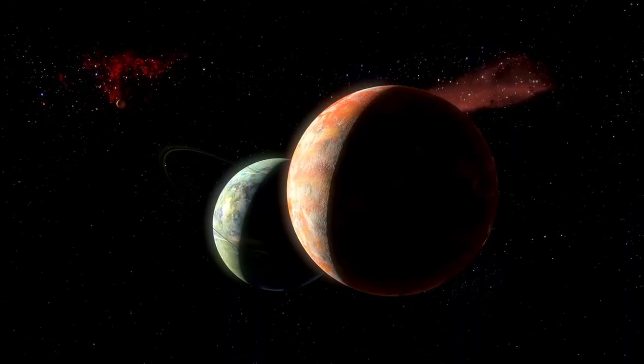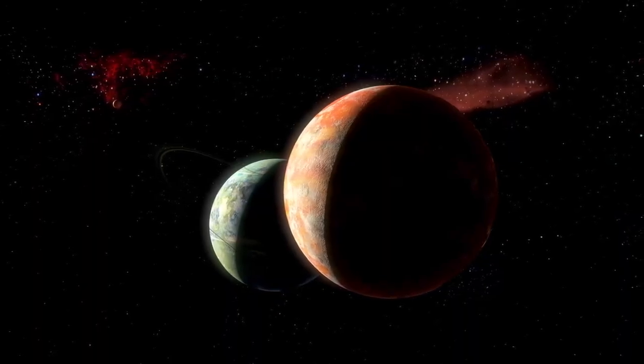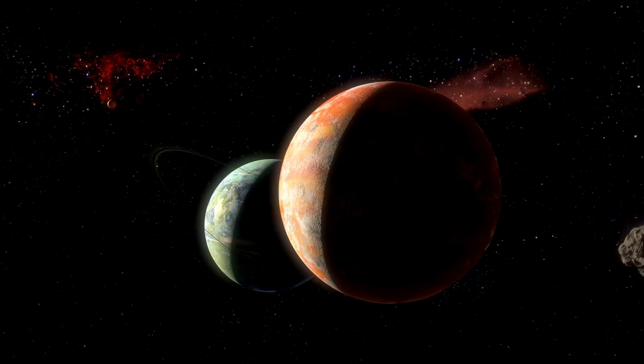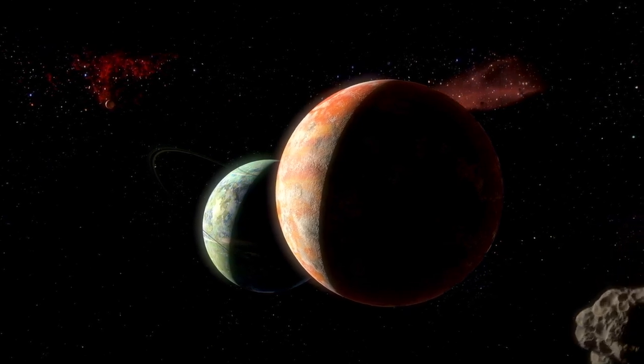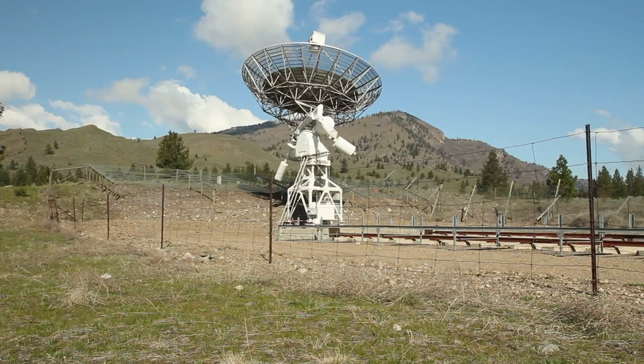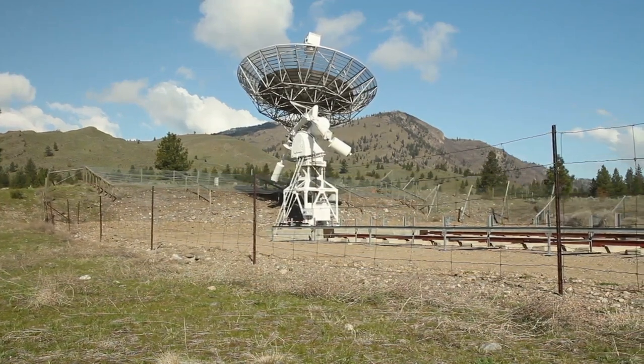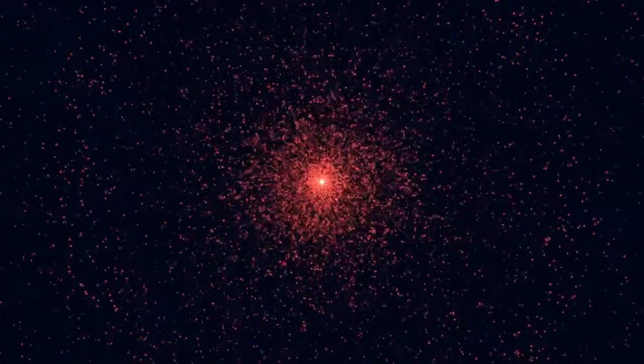To make matters worse, Proxima b is tidally locked, meaning one side is perpetually scorched by the star's heat while the other is frozen in eternal night. Between these extremes lies a thin strip of twilight known as the Terminator Zone, a region where temperatures might be more stable and where the faint hope of life clings on.